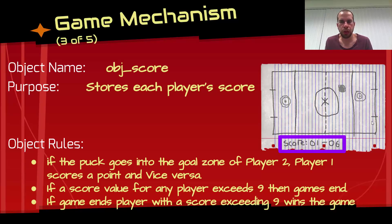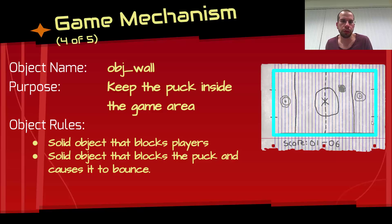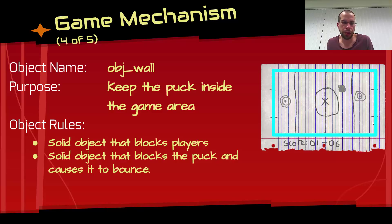The score object stores the score for each player. If the puck goes into the goal zone of player two, then player one scores a point, and vice versa. If a score value for any player exceeds nine then the game ends, and that player wins - going to a win screen. The wall object, highlighted around the perimeter, keeps the puck and players inside the game area - it's a solid object that blocks both and causes the puck to bounce and deflect.